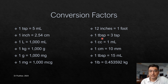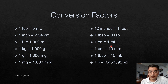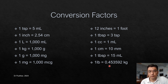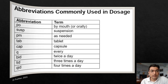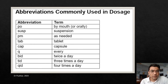Additional conversion factors: 12 inches equals 1 foot, 1 TBSP equals 3 TSP, 1 CC equals 1 ml, 1 centimeter equals 10 mm, 1 TBSP equals 15 ml, and 1 pound equals 0.453592 kg.